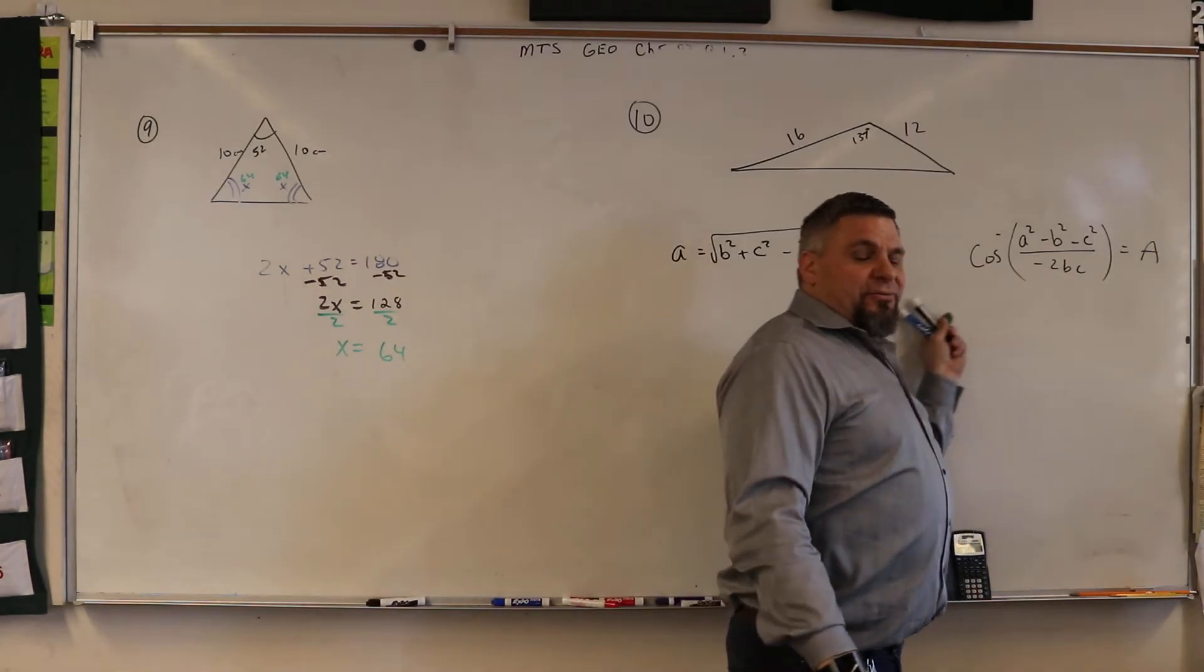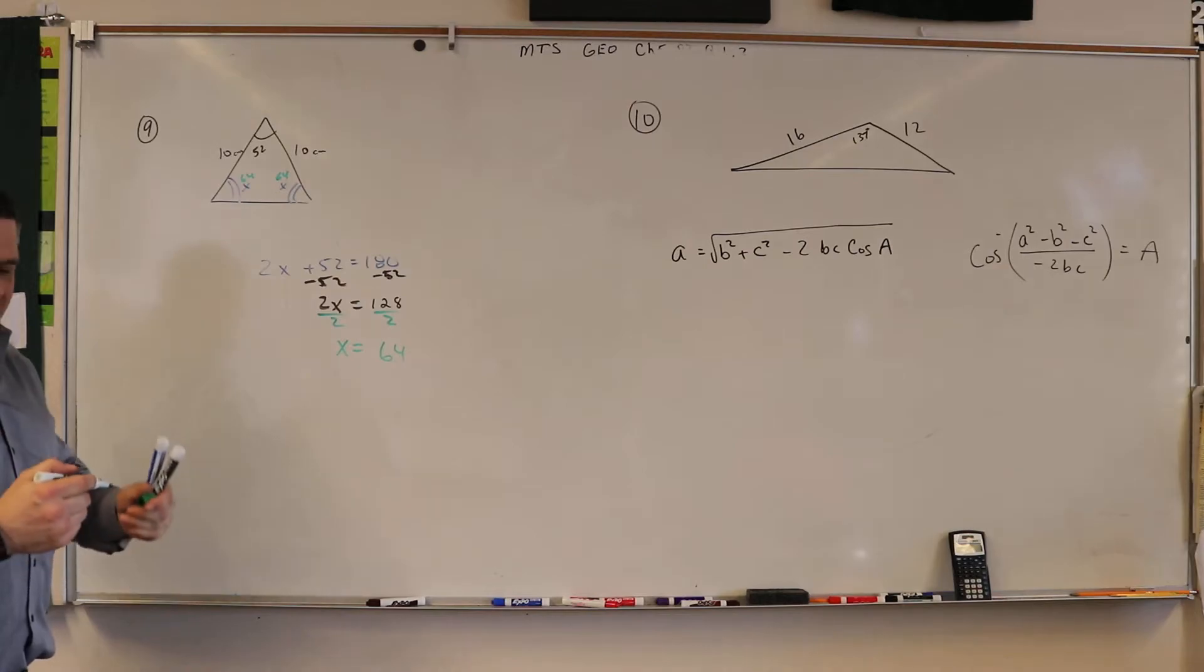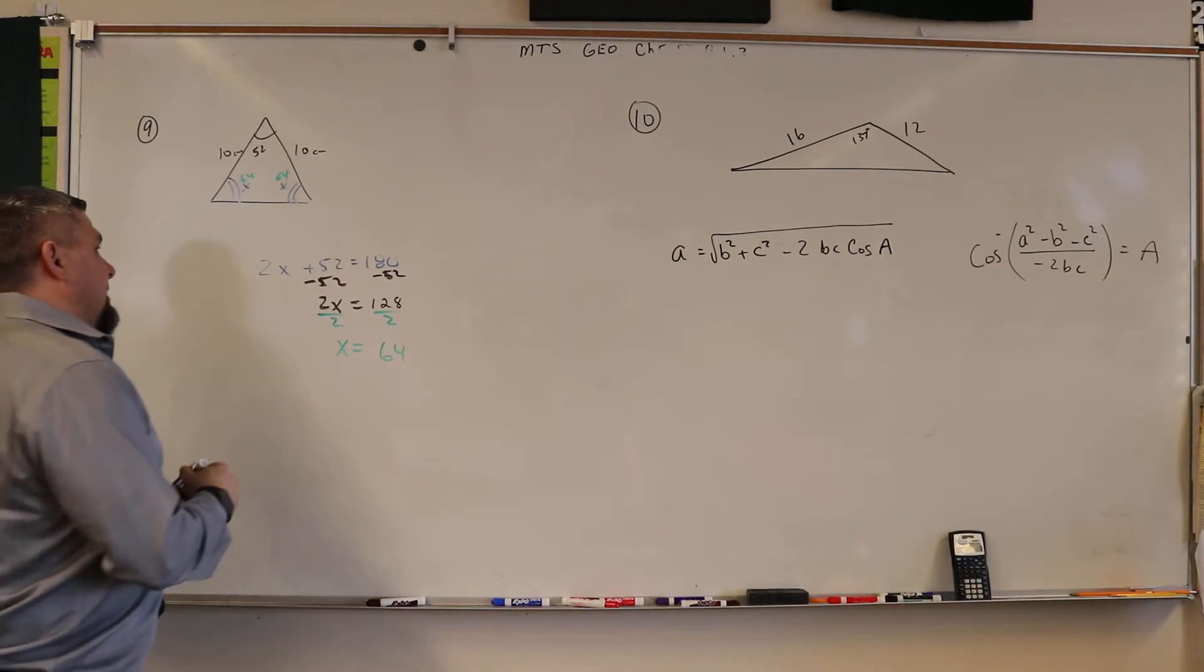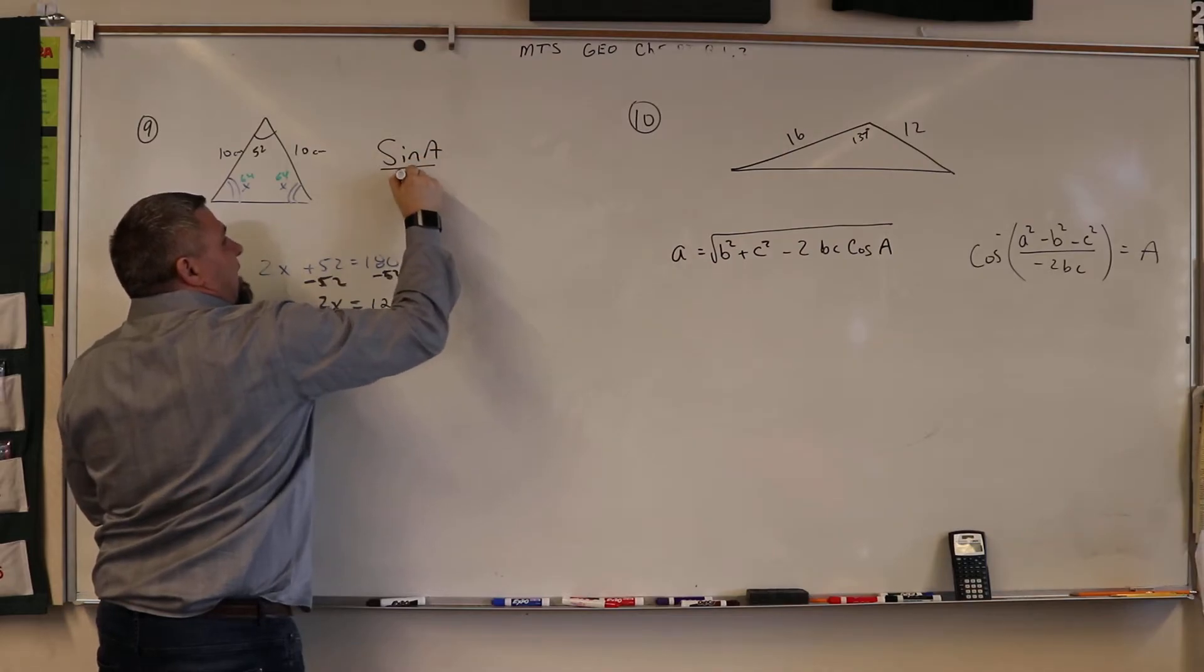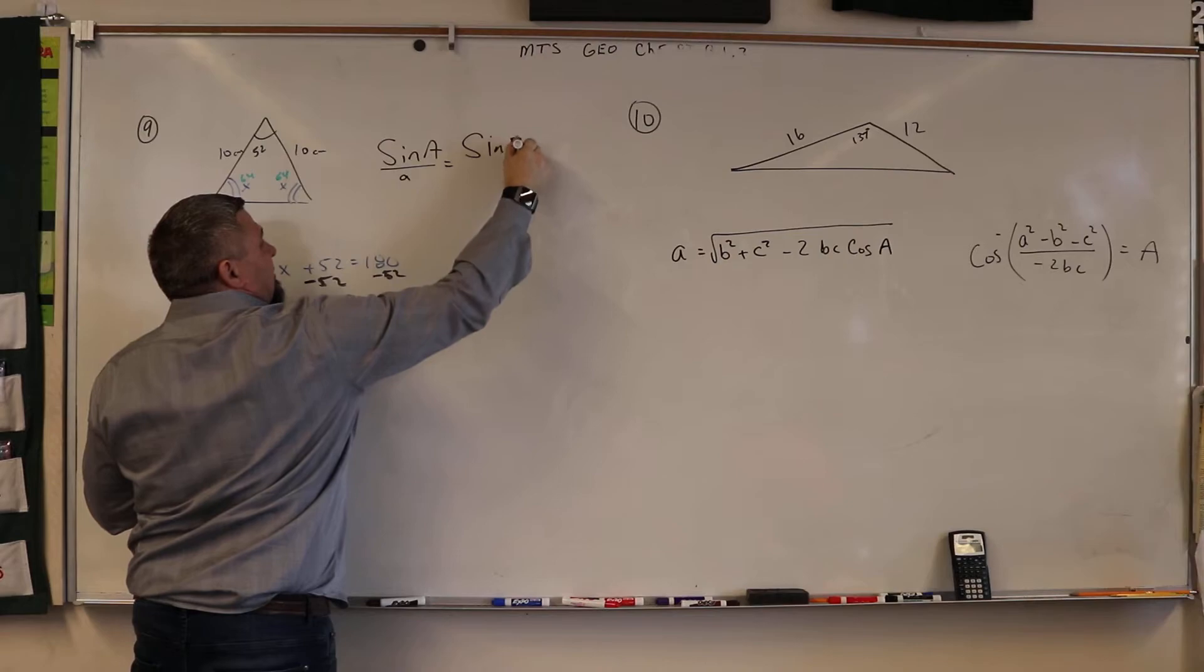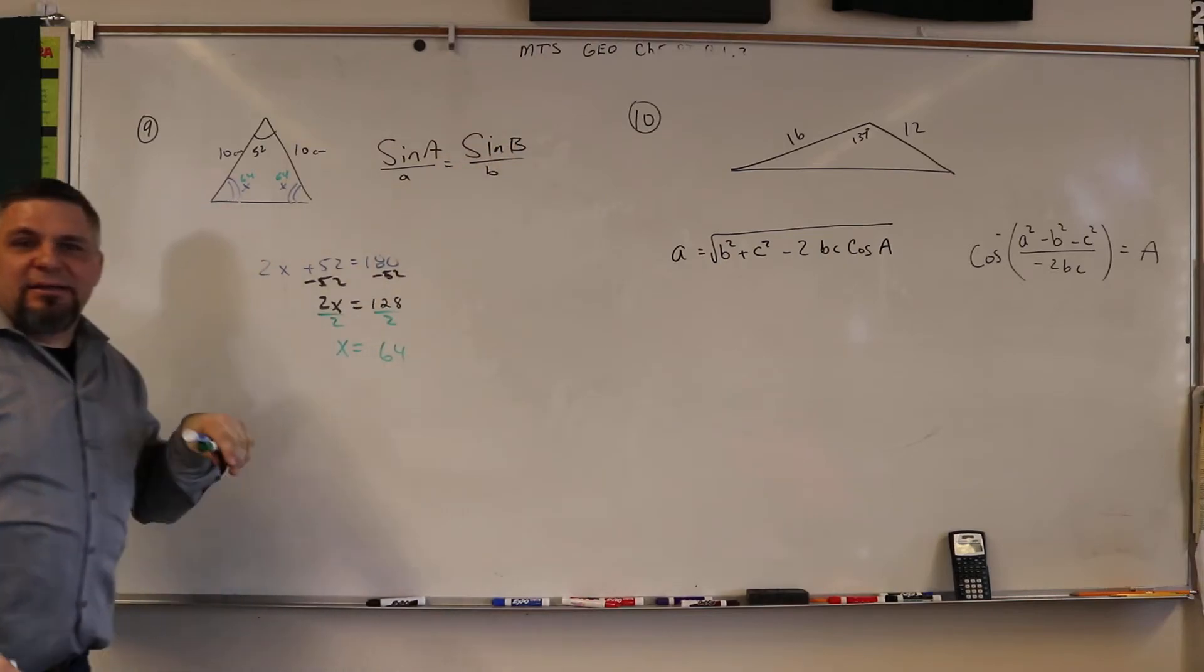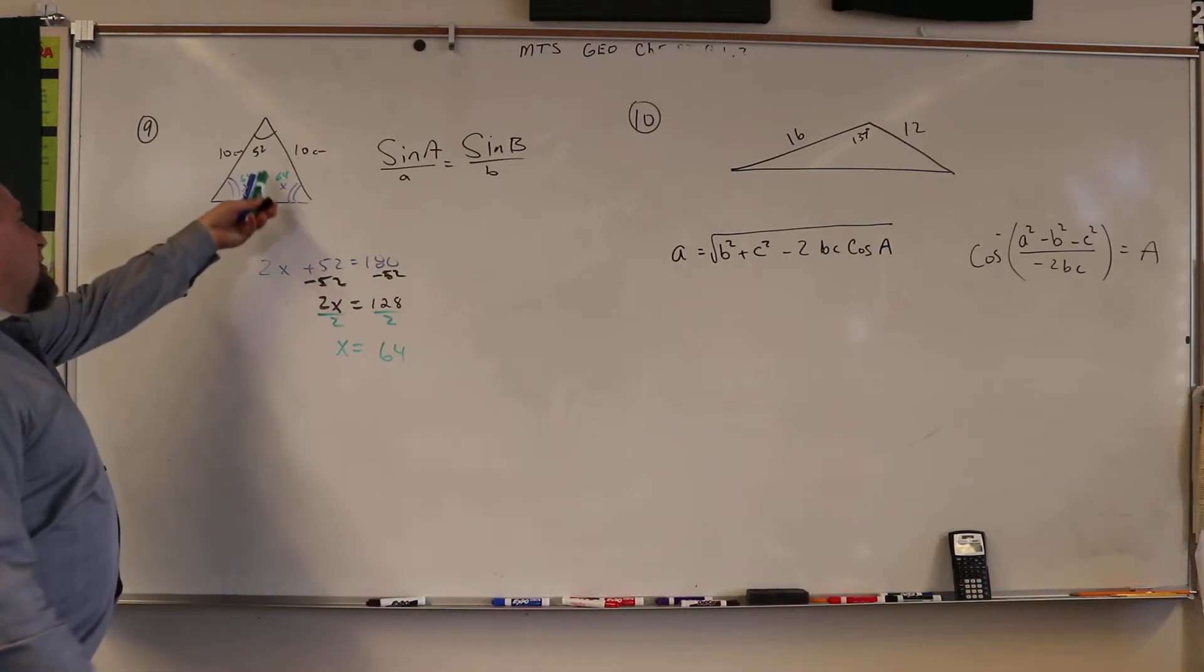But the law of sines is a lot easier because it's the sine of a over a is equal to the sine of b over b, right, and the sine of c over c. And then you can just call these a, b, and c.